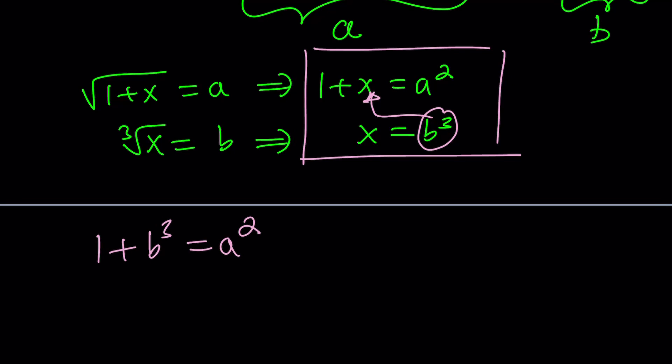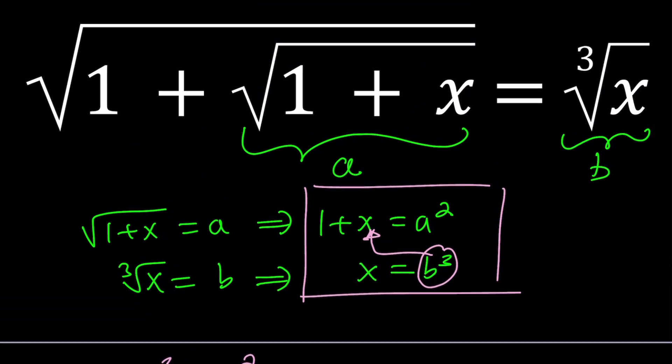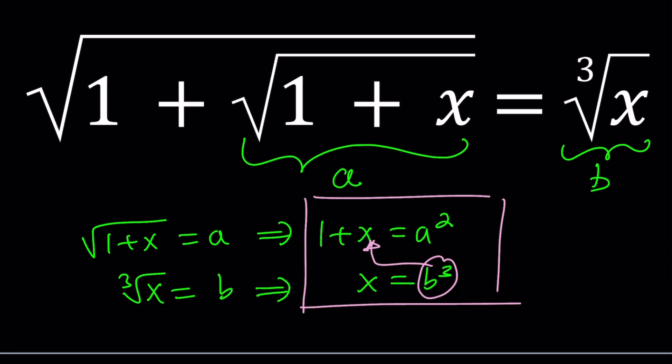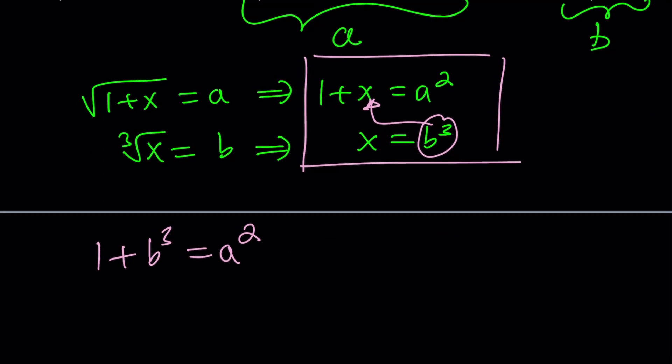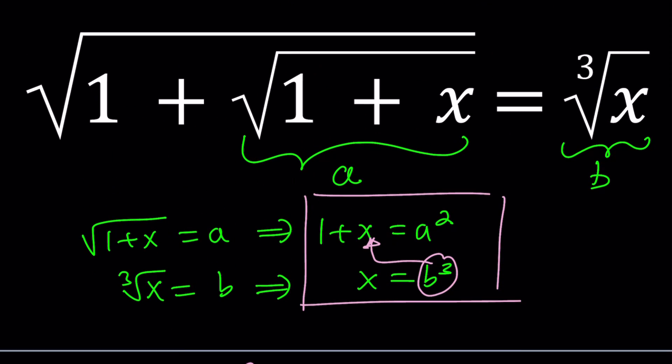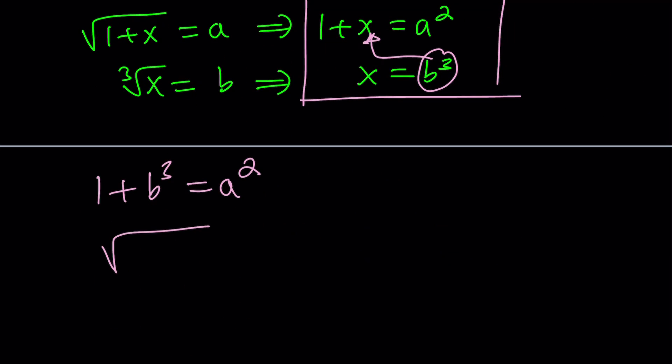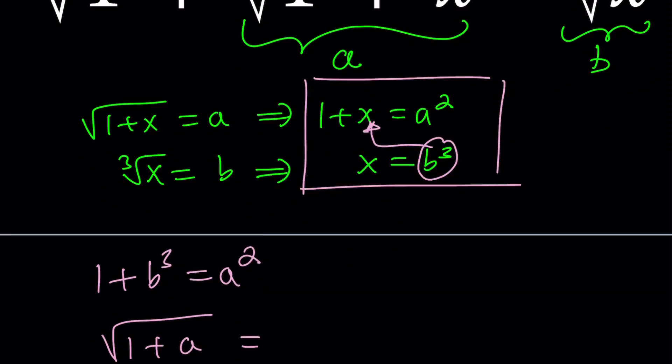Now this equation is not solvable right away because there are two variables and only one equation. But notice that when we named the square root of 1 plus x as a, we got another expression. Since we replaced square root of 1 plus x with a and x is equal to b cubed, we can write square root of 1 plus a equals b.